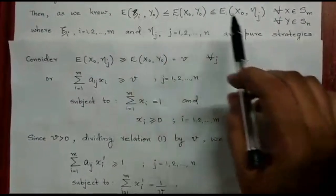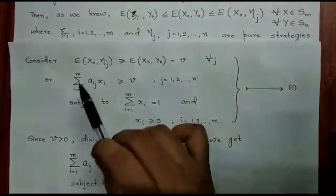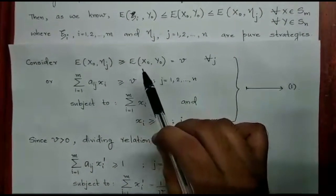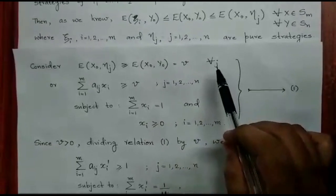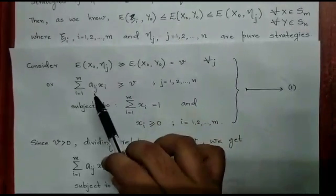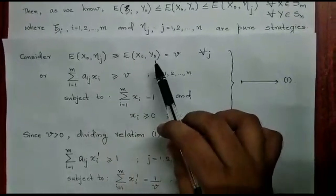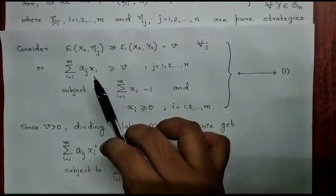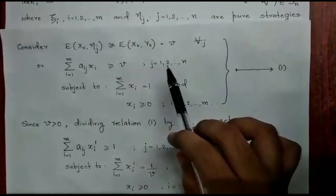Now we have this inequality. Consider this part: expectation of X0 Eta J is greater than or equal to expectation of X0 Y0, that is our value of the game, for every J. Now expectation of X0 Eta J is summation i equal to 1 to M of Aij Xi, and it is greater than or equal to V, where J varies from 1 to N.